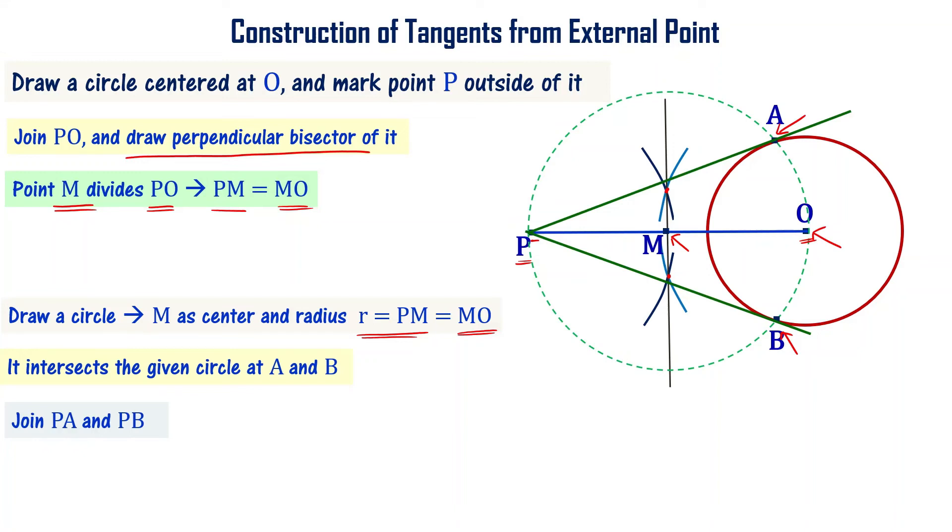PA is a tangent, PB is another tangent. Now you can say that PA and PB are the tangents to the given circle from the given external point P. From external point draw two tangents, PA and PB.